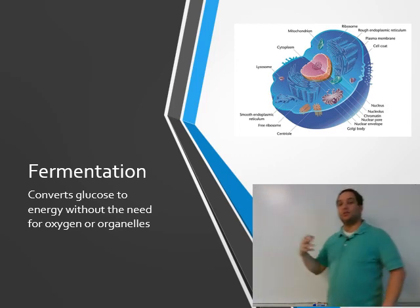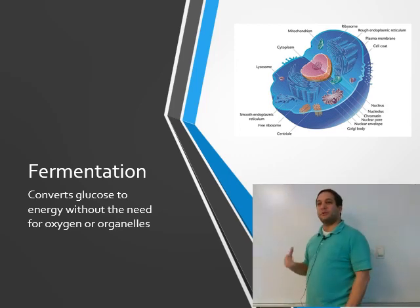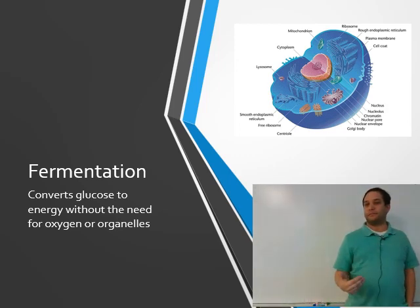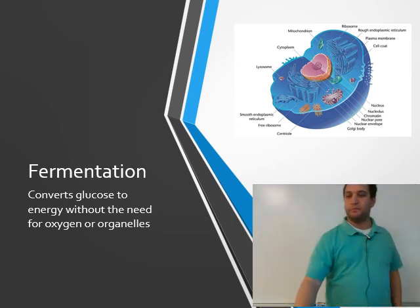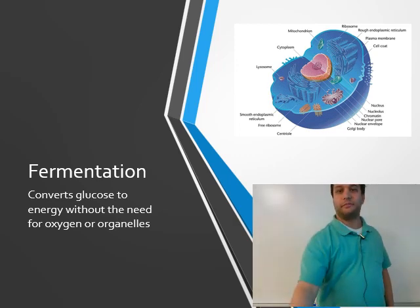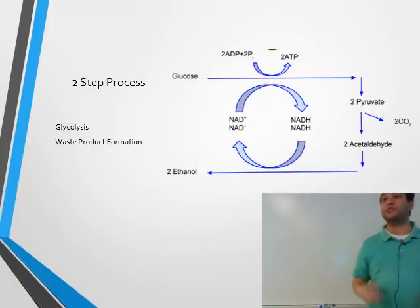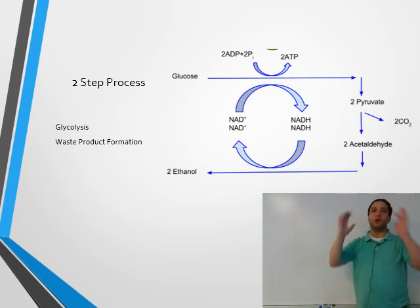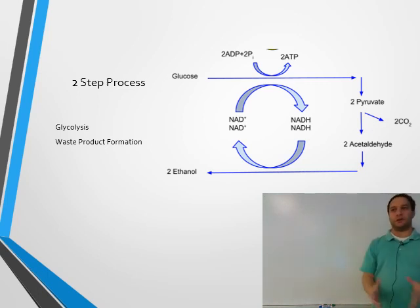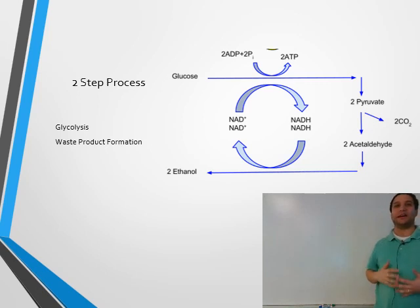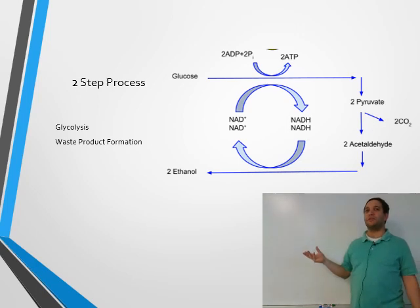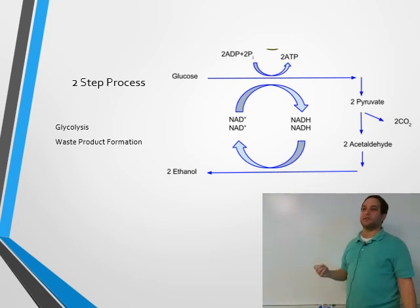Fermentation converts glucose to energy without the need for other organelles. It's very simple and efficient. It is a two-step process, and the wonderful part is you already know half of it - the entire first step is just glycolysis. The second step is waste product formation.